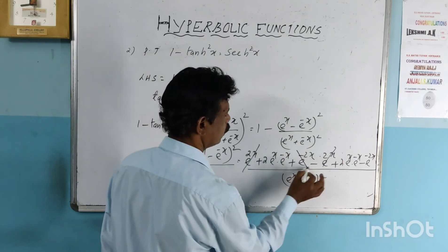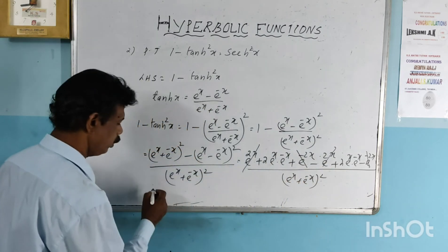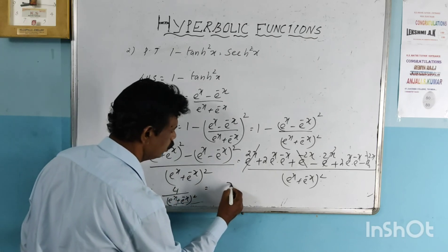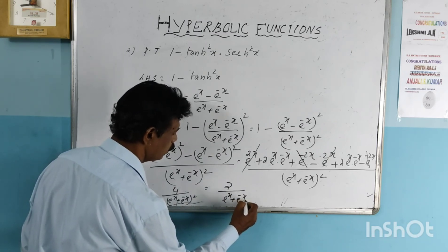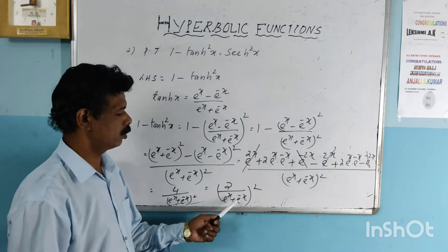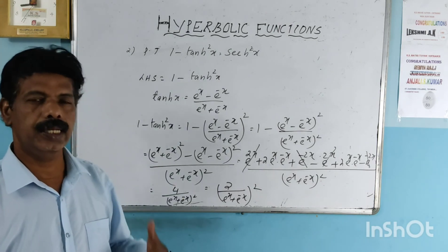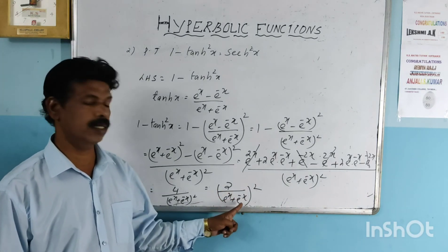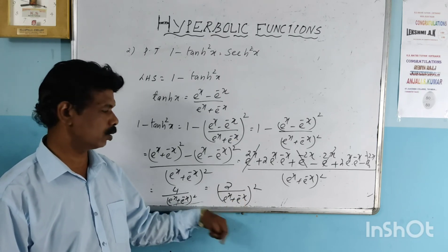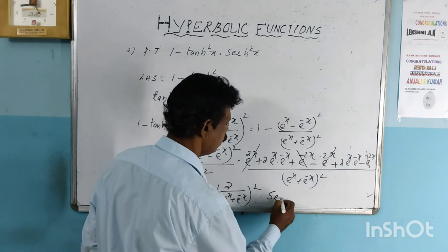The e raised to 2x and e raised to minus 2x terms cancel since they are equal and opposite. Each product e raised to x times e raised to minus x equals e raised to 0 equals 1, so we get 2 plus 2 equals 4. This gives 4 divided by e raised to x plus e raised to minus x all squared, which can be written as 2 over e raised to x plus e raised to minus x, the whole squared. Since sech(x) equals 2 divided by e raised to x plus e raised to minus x, this equals sech squared x.